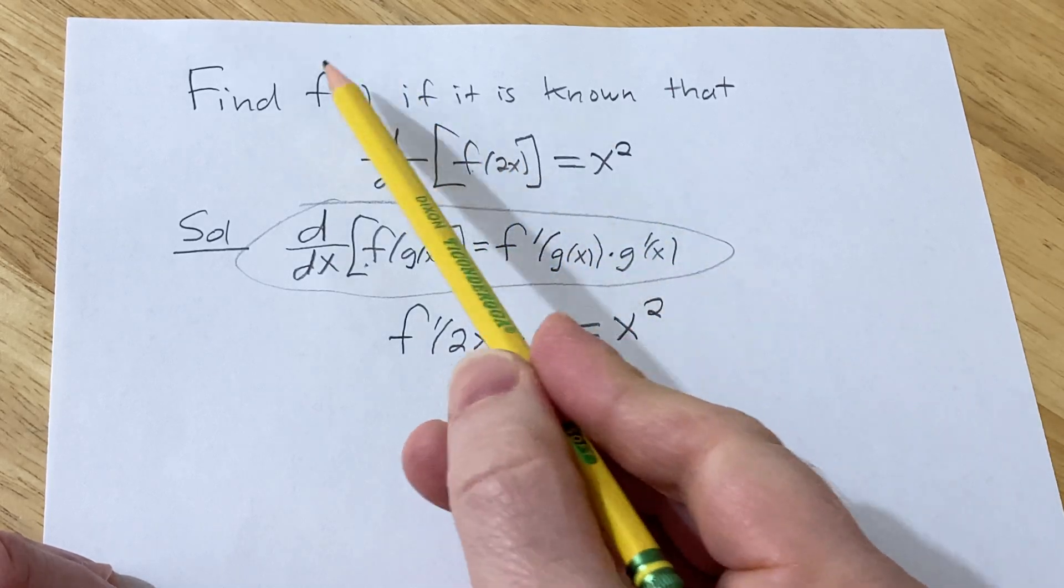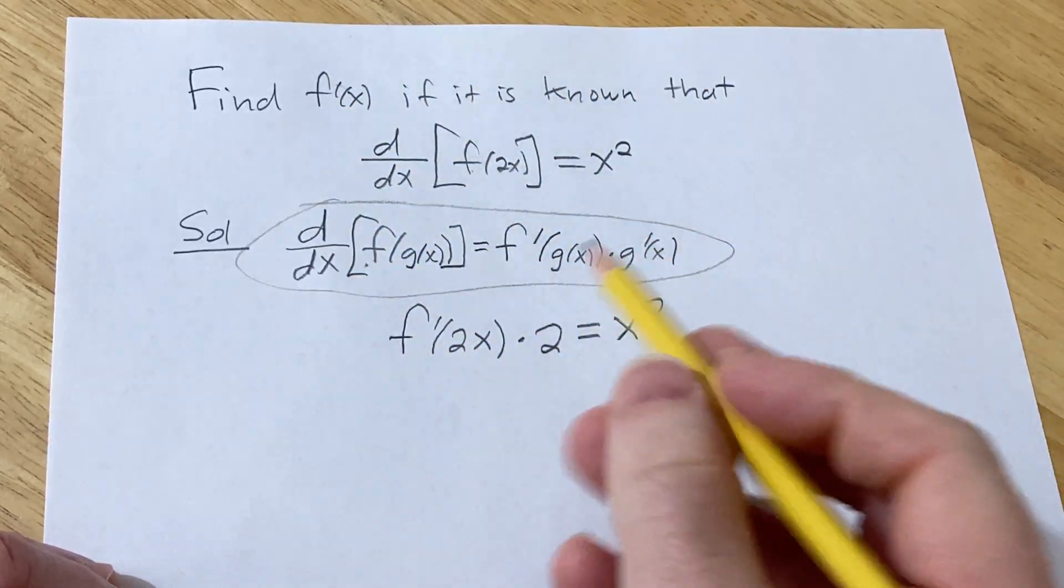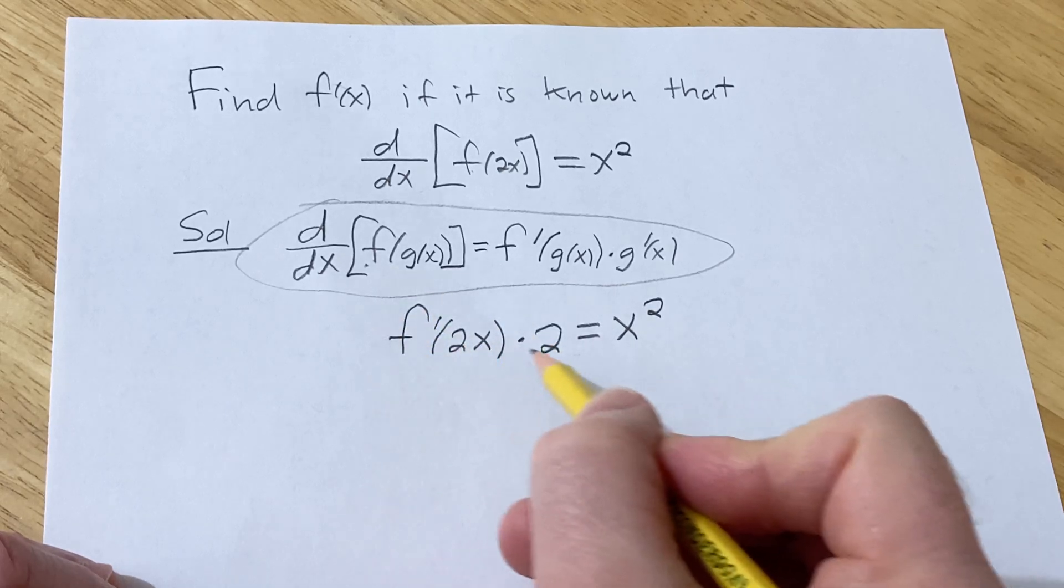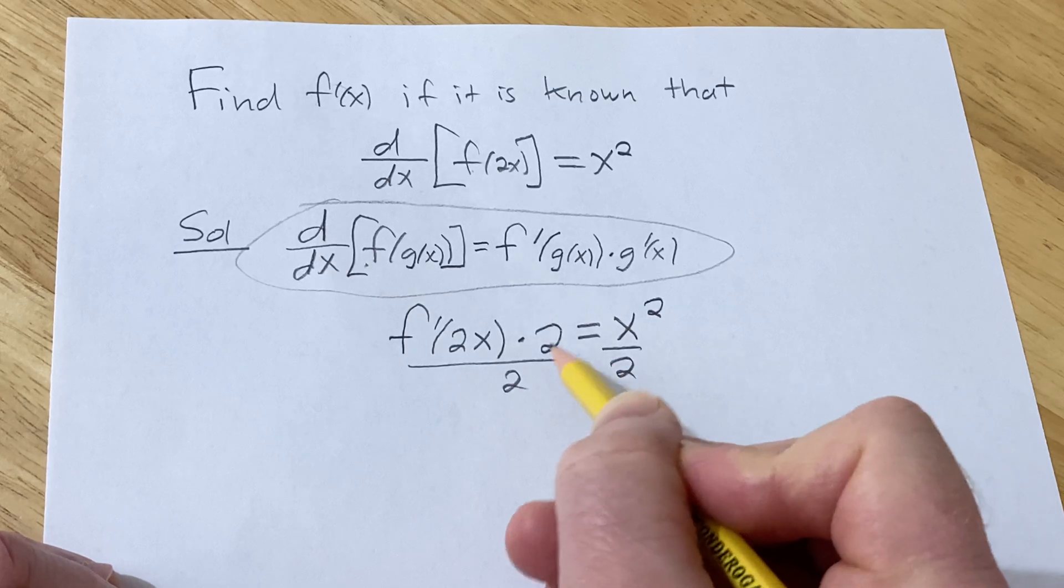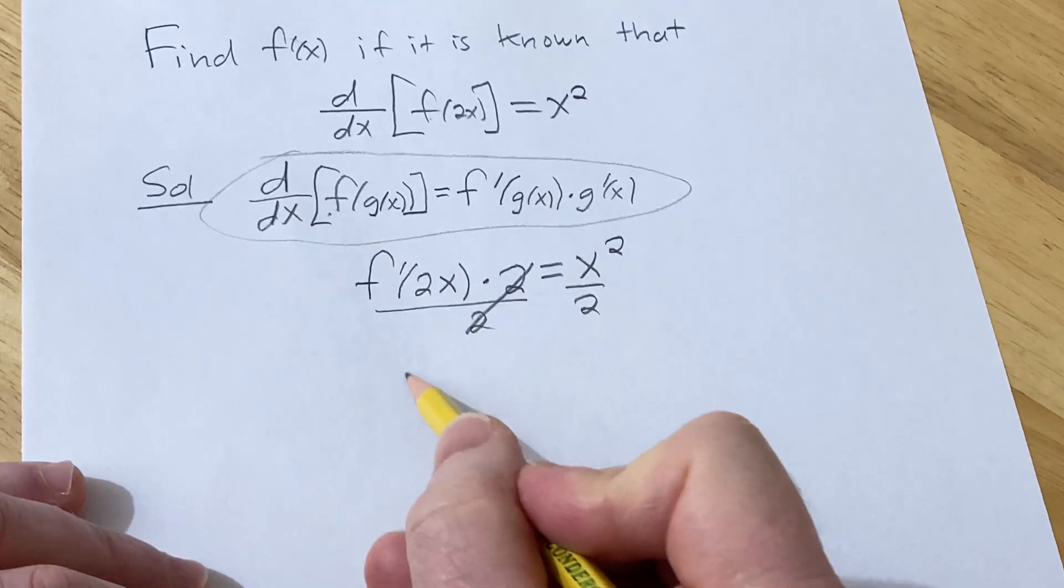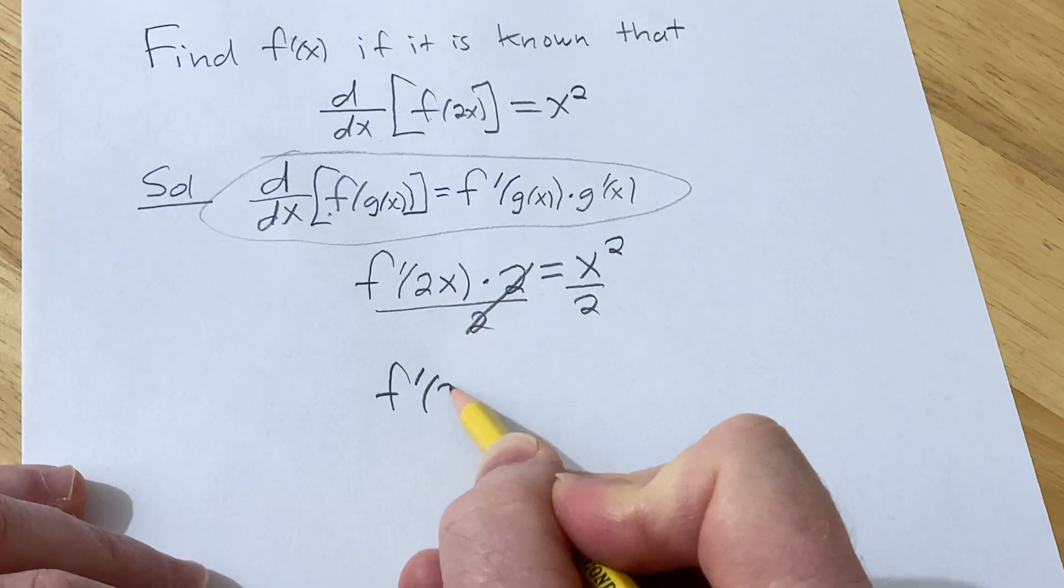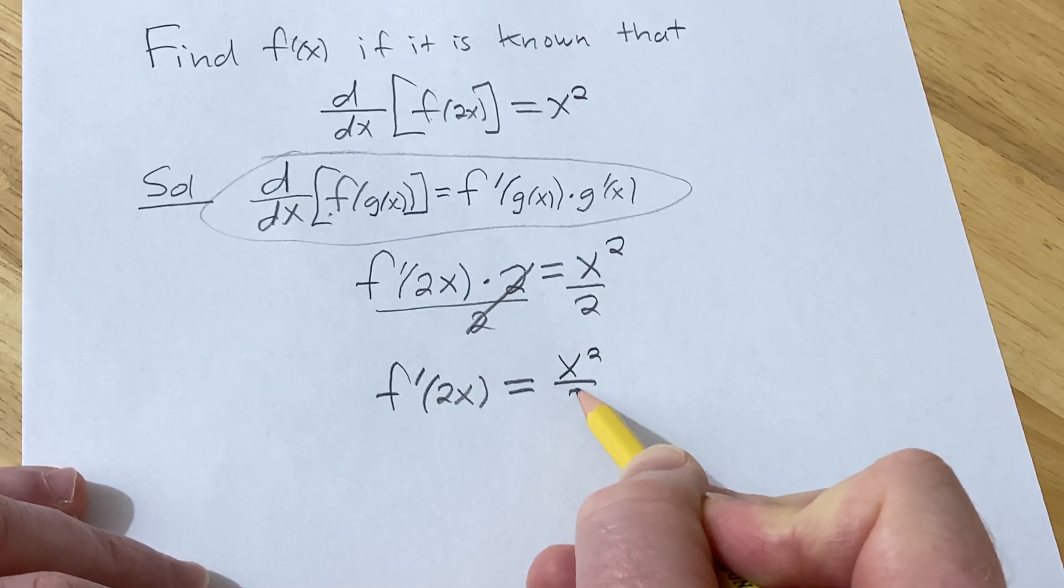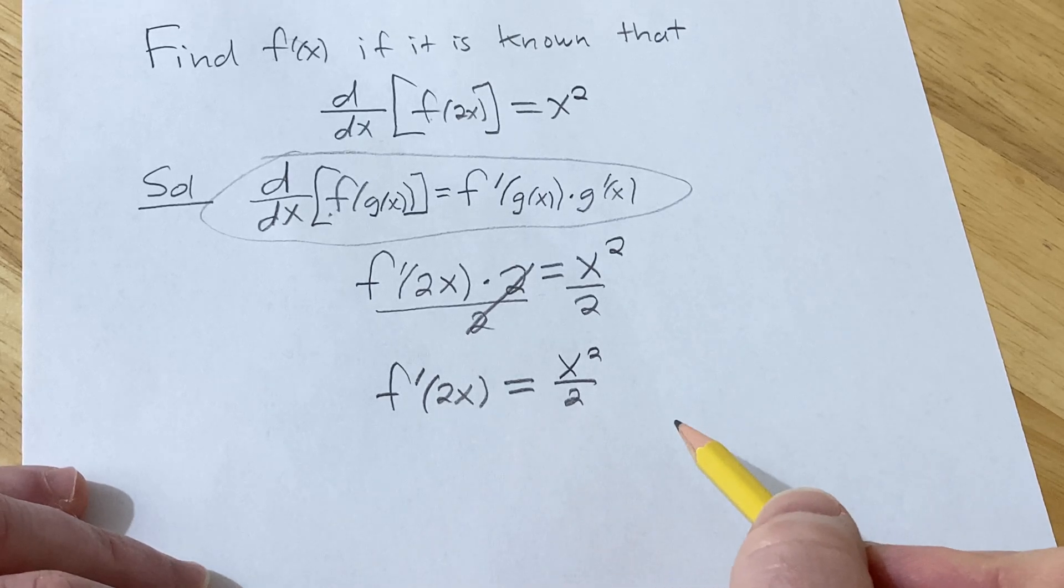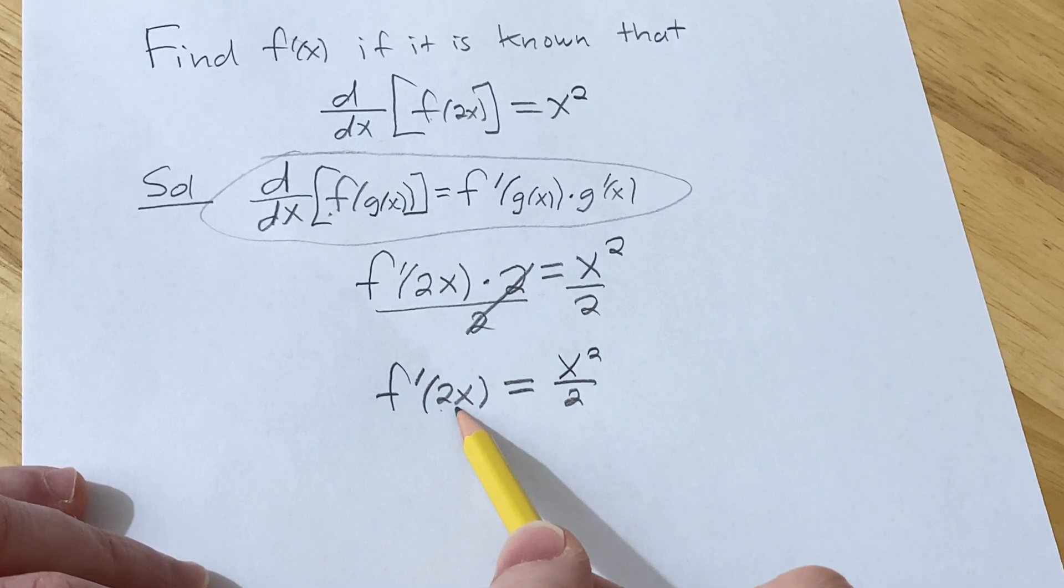Now the goal is to solve for the derivative of f. So the natural thing to do is to solve for this. Let's divide by 2 here. So we have f prime of 2x and that's equal to x squared over 2. We're not quite there yet. The problem is we have a 2x here, we need an x.